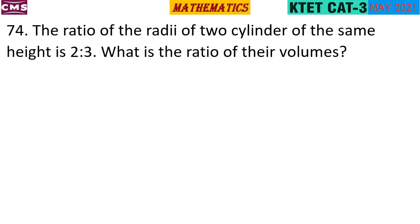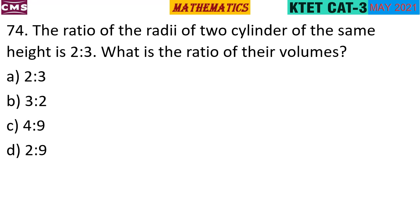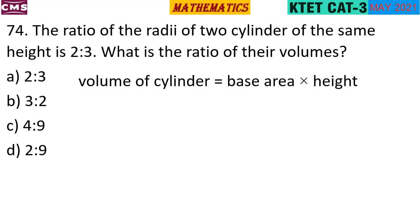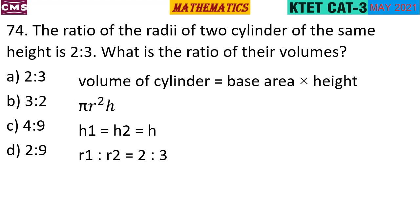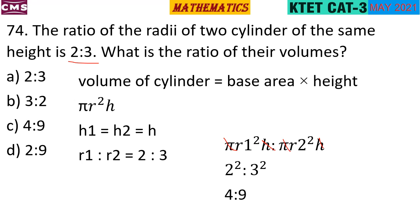The ratio of the radius of two cylinders of the same height is 2 to 3. What is the ratio of their volume? Volume of cylinder is base area times height: pi r square h. Since h1 equals h2, and r1 is 2, r2 is 3, the ratio is 4 to 9.